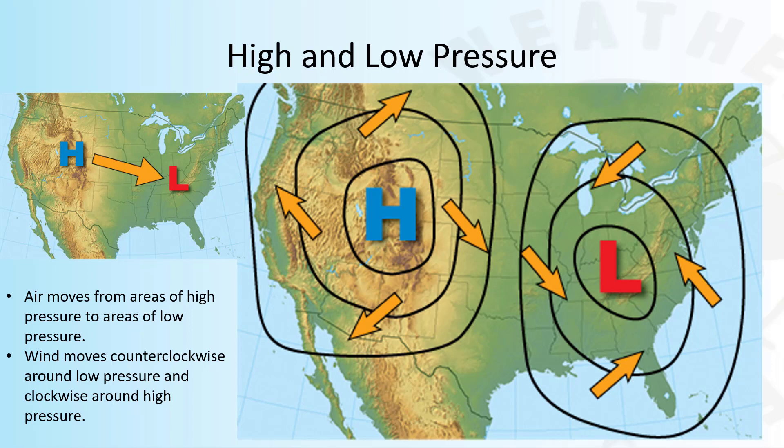The black lines are isobars. Isobars connect areas of equal pressure. Pressure is highest at the center of the high and lowest at the center of the low.